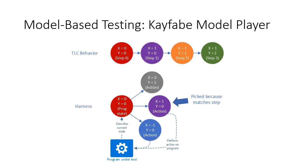Now we get to the idea behind Kayfabe - to do model-based testing using TLC to guide a harness through altering the program under test with actions. At the top, we have a TLC behavior, which is a path in the TLC state graph from the initial state through a series of different steps. The harness takes the program under test and describes its current state as a TLA+ expression. At each step, the program under test is asked for the actions it can perform. Only one of those actions matches the behavior, so that's the action we pick. We perform that action on the program, move on to the next step, and verify that no inappropriate actions are enabled - an inappropriate action being one that does not have a path to it in the TLC state graph.